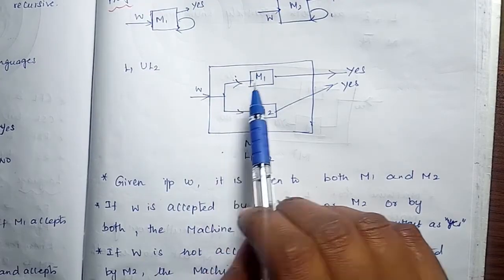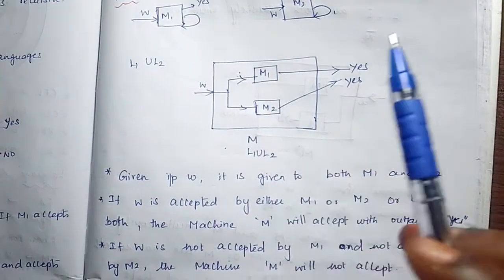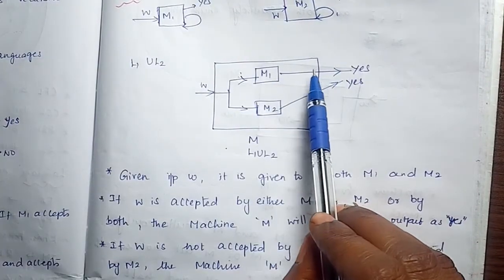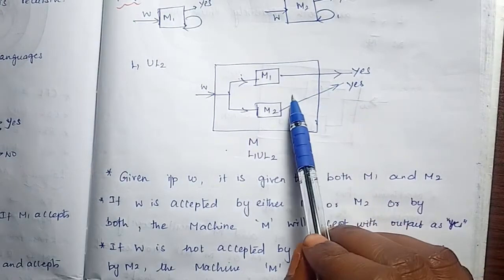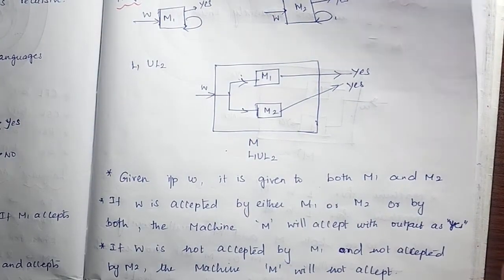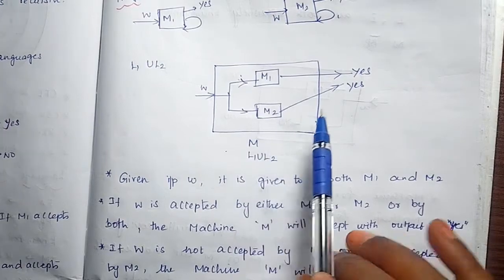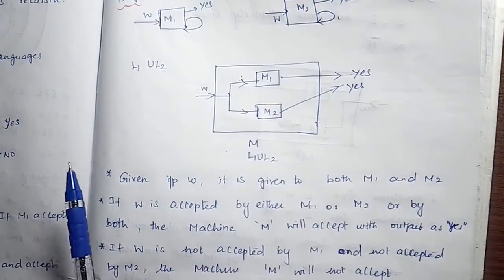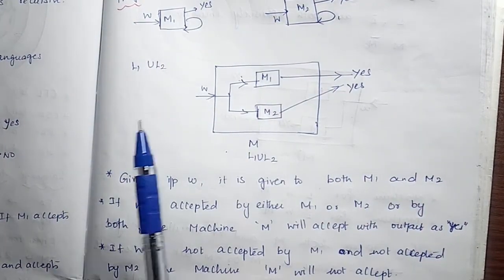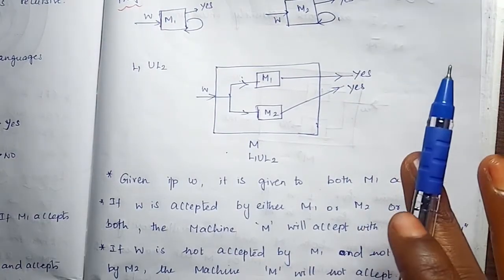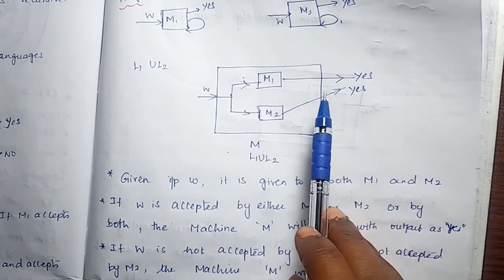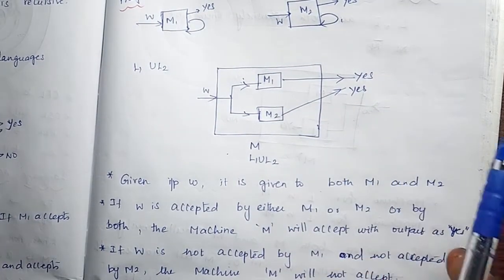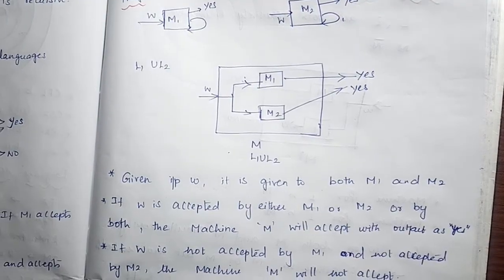Instead, the input w is given to both M1 and M2 simultaneously. If w is accepted by either M1 or M2, or by both, the machine accepts with output yes. If w is not accepted by M1 and not accepted by M2, the machine M will not accept. Hence the union of two recursively enumerable languages is also a recursively enumerable language.